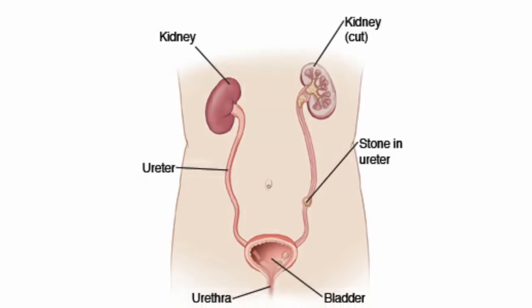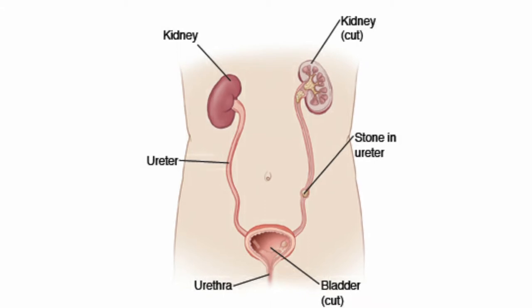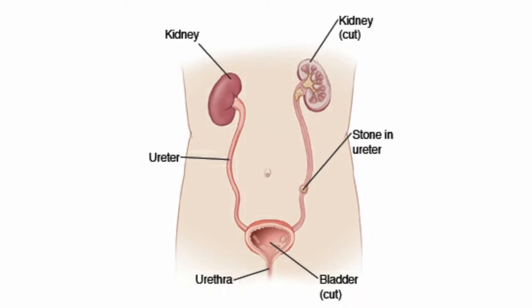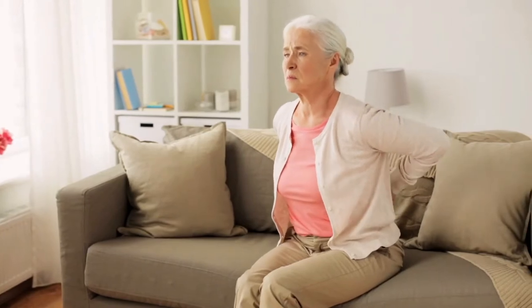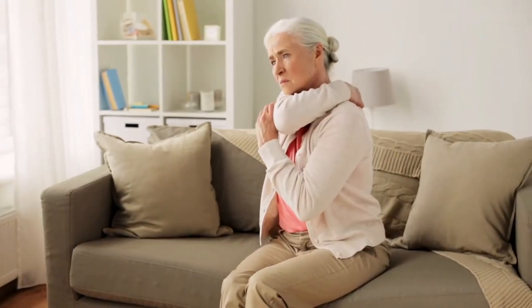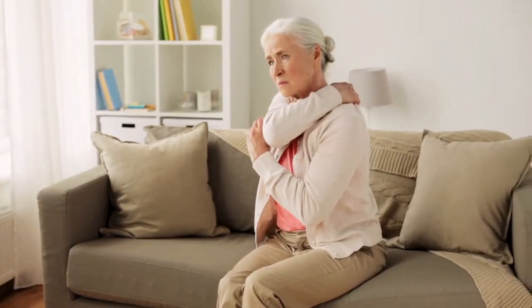Stones can be undetectable in the kidney until they start to move down to the ureter. If a stone gets too big, it may start to scratch the walls of the ureter as it moves down to the bladder, and that's when it causes pain. The scar it leaves on the ureter can also cause one to see blood in the urine.